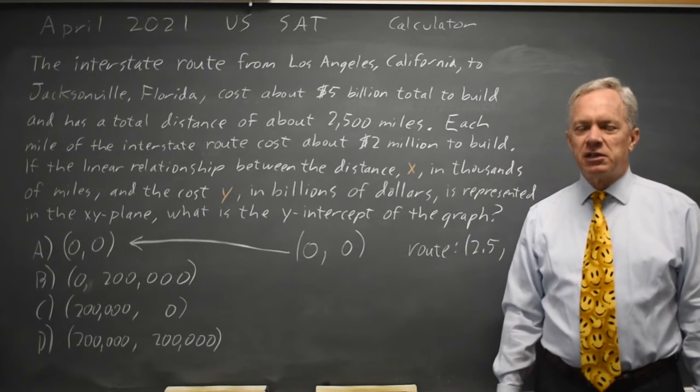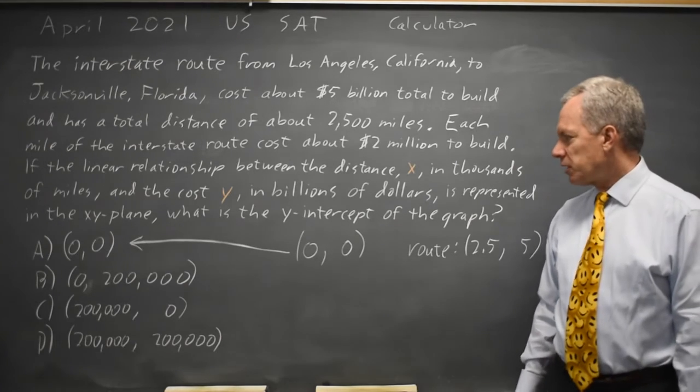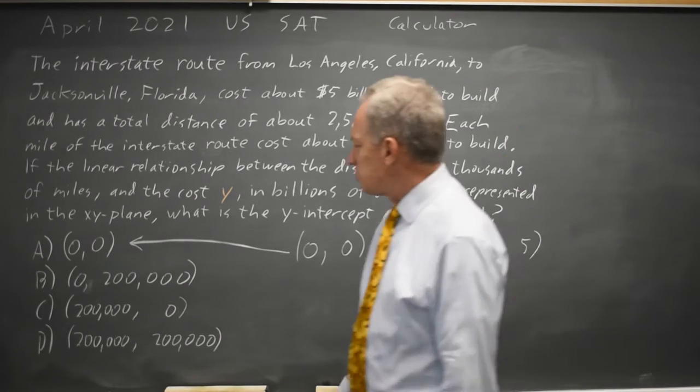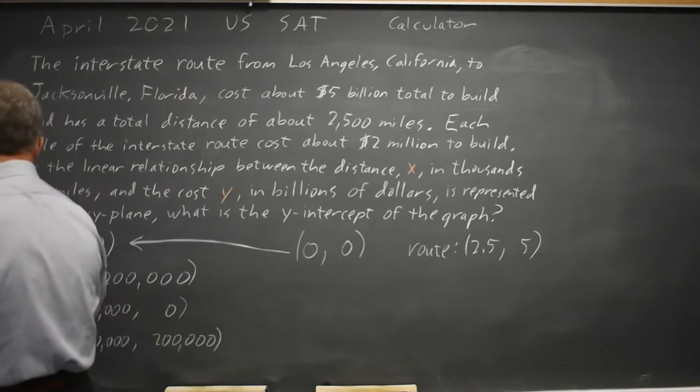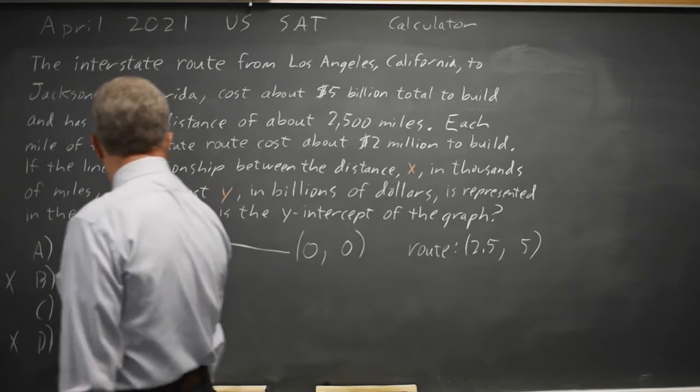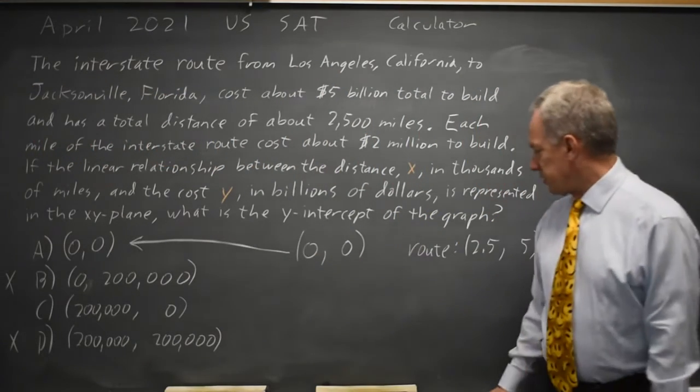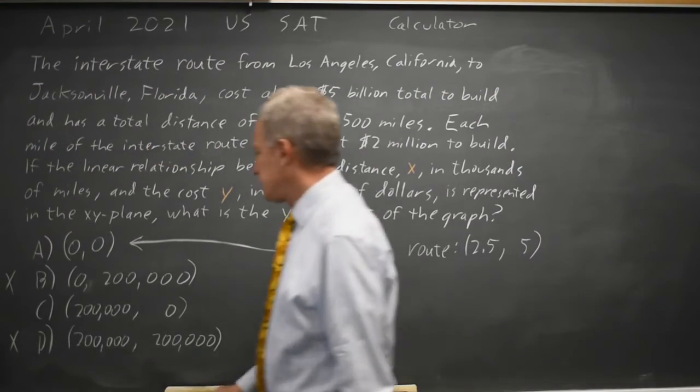So the route they're describing does not have any points with y-coordinate greater than 5, so choices B and D are wrong. And it does not have any x-coordinates greater than 2.5, so choice C is wrong.